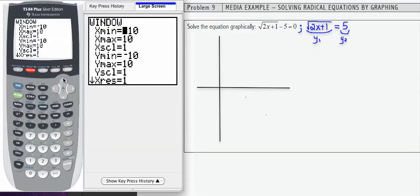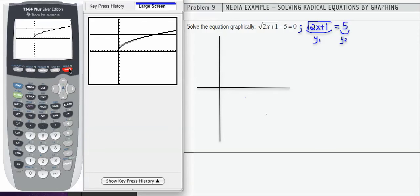I need to go to my window and increase the size of x max. I'm going to make that 20, and then I'm going to hit graph again just to make sure that I can see the intersection.